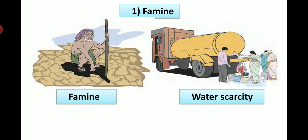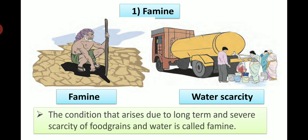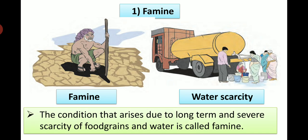Famine. We can see the condition arising due to famine in these pictures. There is scarcity of water. The condition that arises due to long term and severe scarcity of food grains and water is called famine.